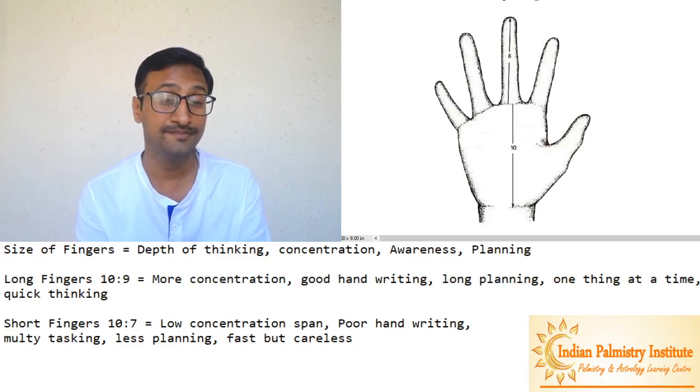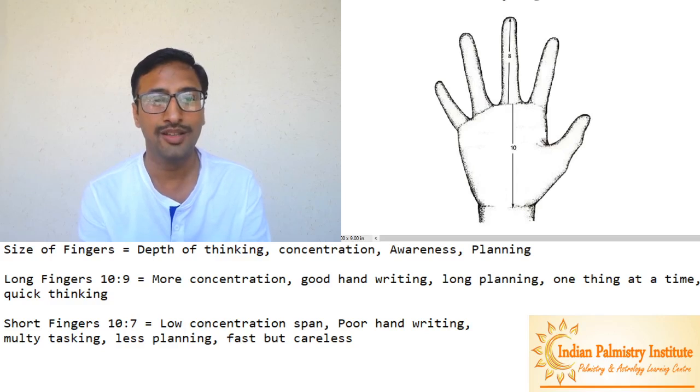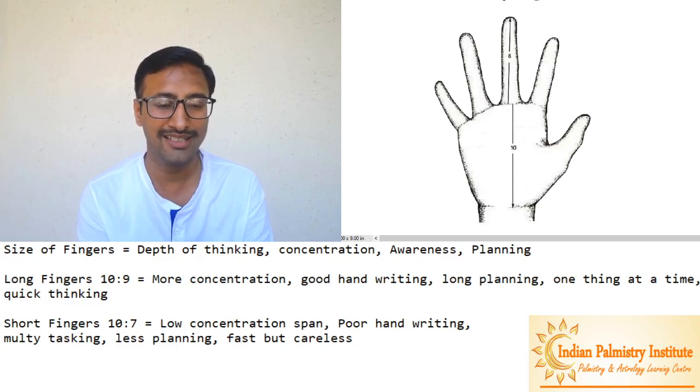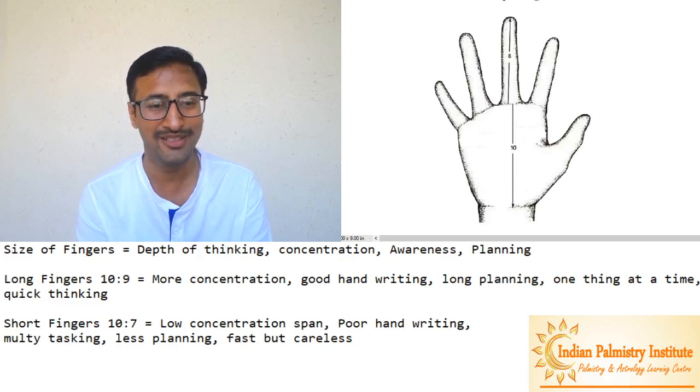So now your job is to see at least five people's hands and apply your learning on them. Find some people who are very fast and careless, and find some people who are very bland or good artists with good handwriting. Check their hands and find the differences.